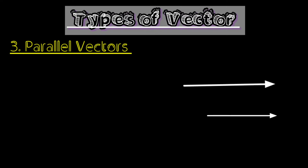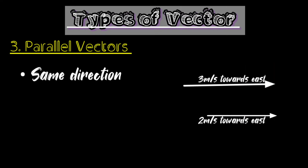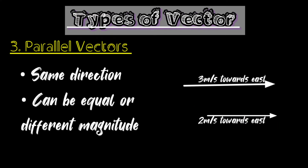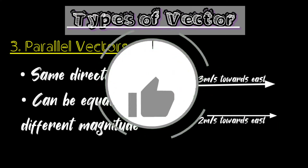Parallel vectors: when two vectors are in the same direction and having the same angle but having different magnitude, it is known as a parallel vector.